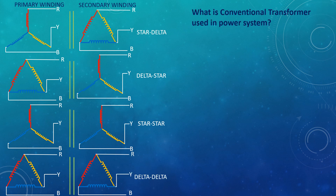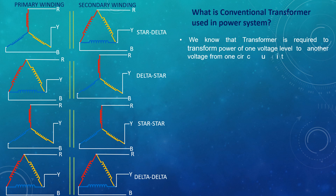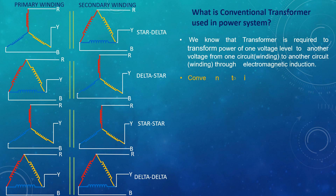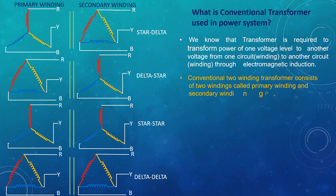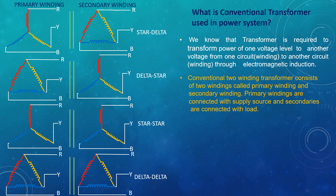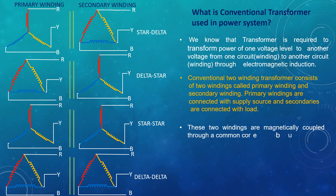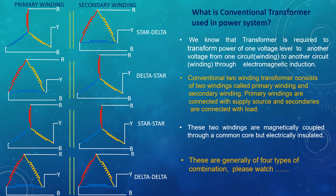What is a conventional transformer used in power systems? A transformer is required to transform power from one voltage level to another voltage level, from one circuit to another circuit, through electromagnetic induction. A conventional two-winding transformer consists of two windings called primary winding and secondary winding. Primary windings are connected with the supply source and secondaries are connected with the load. These two windings are magnetically coupled with each other through a common core but electrically insulated. There are generally four types of combinations — please watch the left-hand side.